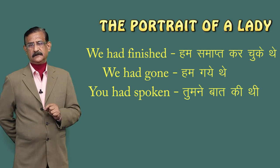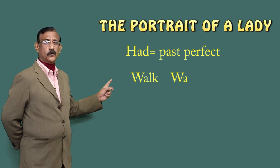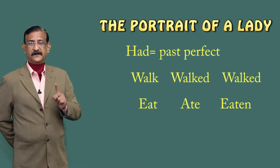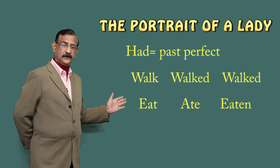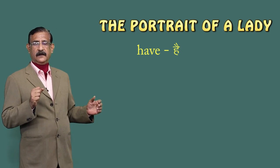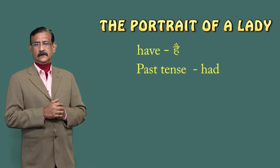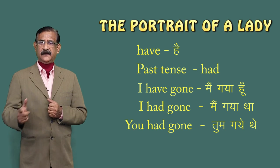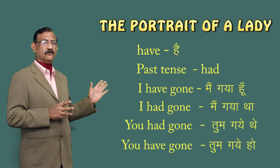The third form: walk — walked — walked; eat — ate — eaten. So with 'had' or 'have,' always the third form of the verb comes. The next sentence: 'When we both had finished, we would walk back together' — the grandmother and the child would both finish their work at the temple and school, then walk back together. 'I had gone' — main gaya tha; 'you had gone' — tum gaye the; 'you have gone' — these show past perfect usage.